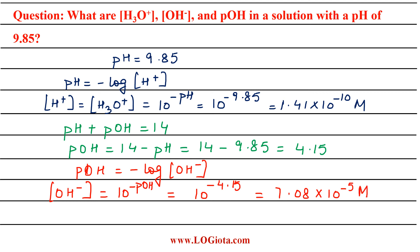So the answers are: [H3O⁺] = 1.41 × 10⁻¹⁰ M, pOH = 4.15, and [OH⁻] = 7.08 × 10⁻⁵ M.